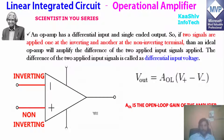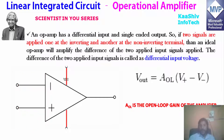Apart from the positive terminal, the non-inverting terminal and the negative terminal is the inverting terminal — so this is the difference. Non-inverting minus inverting terminal is the difference. This is the open-loop gain; the amplifier has an open-loop gain.